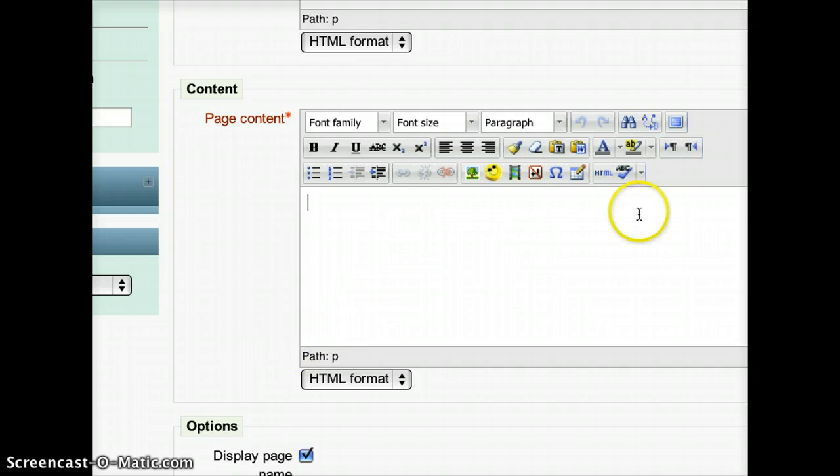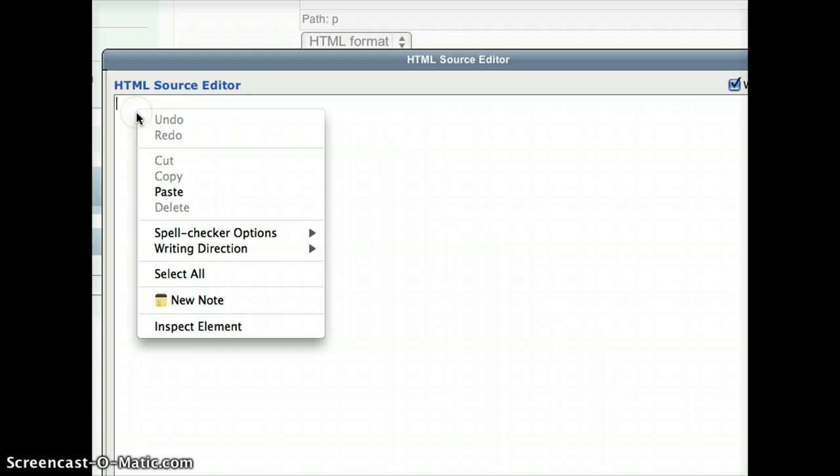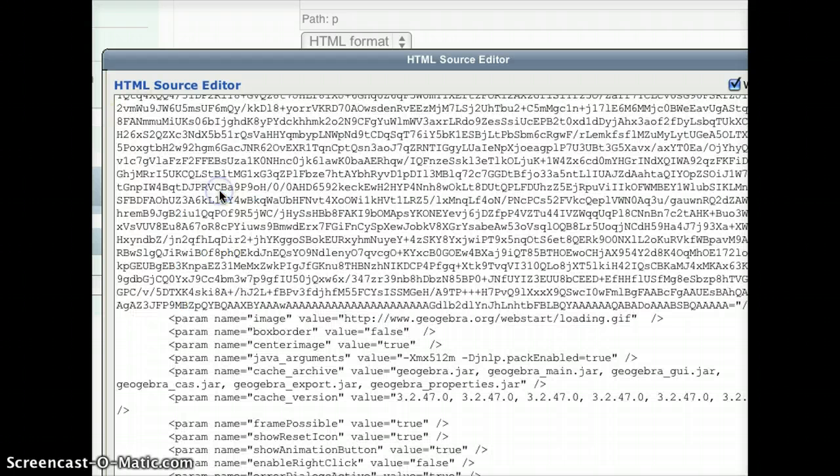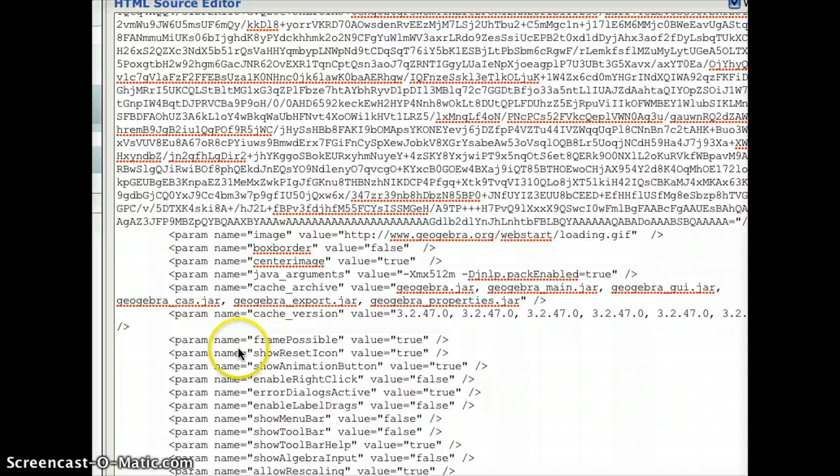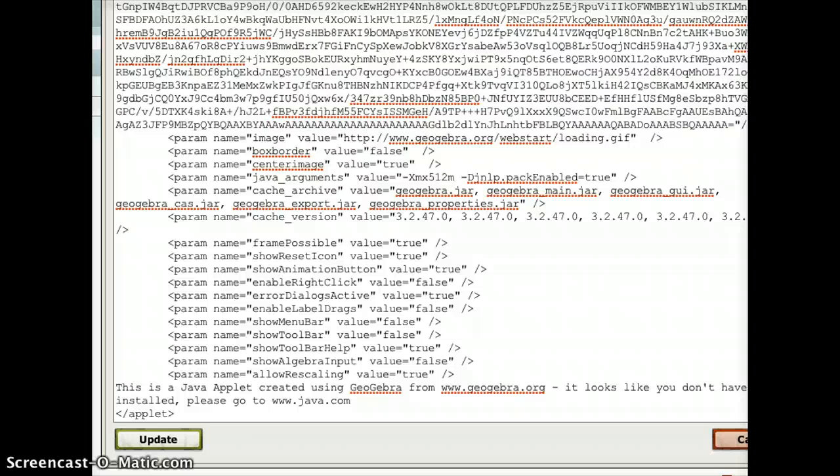before pasting, I'm going to go over here and choose this HTML button. And what that does is it allows me to actually put a program directly into the Moodle page. So when I push this button, you'll see a new popup appears. And I can just literally just right click on there and choose paste. And all of a sudden, all of this mess appears. Now as scary as that mess looks, I don't really care what's in there. I just care that it's pasted into that HTML editor.